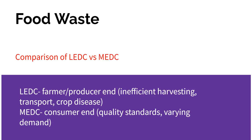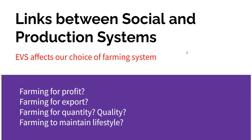We have massive inequality between LEDCs and MEDCs. In LEDCs, there's inefficient farming — they don't have the technology, they have diseases and transportation problems. At MEDCs, we have problems on the consumer end: we're just picky. Our quality standards and demand for certain things is just different. Different social systems produce different sets of problems.